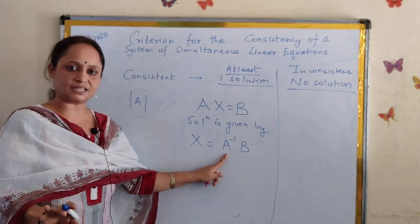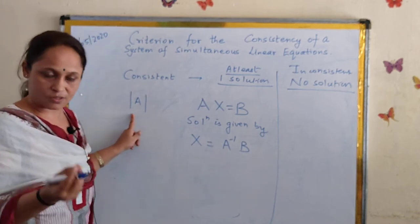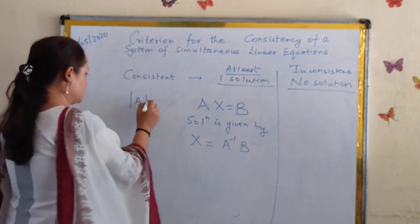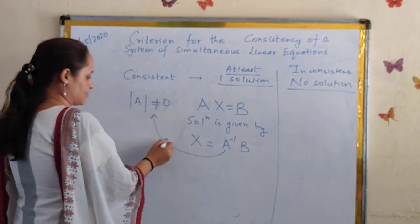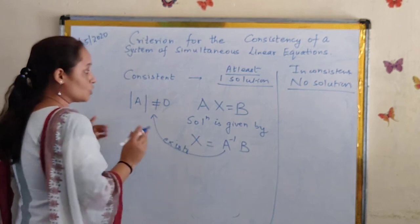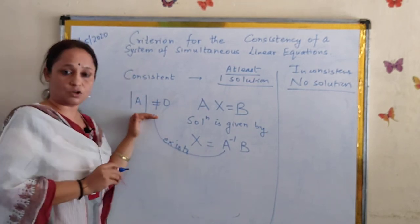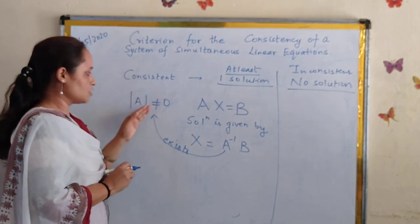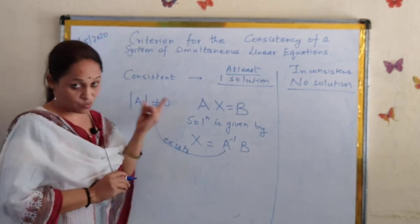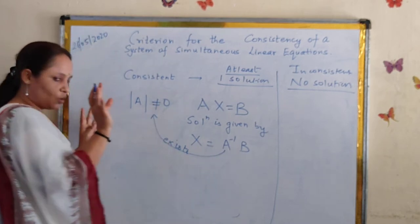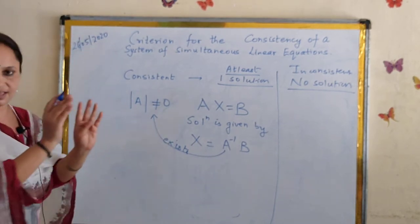For A inverse to exist, we know the determinant of A has to be non-zero. When matrix A is non-singular — if the determinant of A is non-zero — then we say A inverse exists. So clearly, the consistency also depends on the determinant of A. If the system is consistent, then the determinant of A has to be non-zero. That's one case.